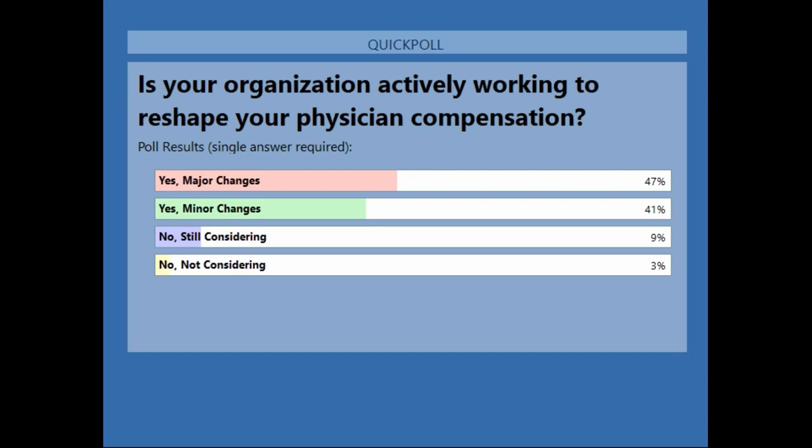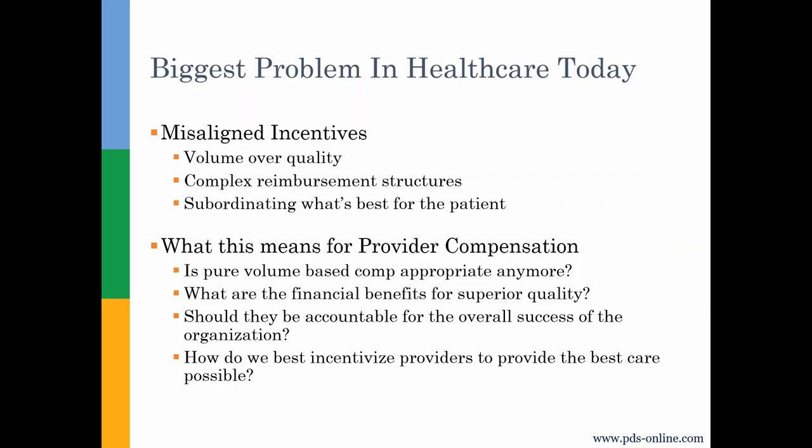It really makes a lot of sense. One of the things I've found reading articles and attending conferences is that the biggest problem going on in healthcare today is a problem of misaligned incentives. Right now we're incentivizing volume over quality, and anytime that happens it really subordinates what's best for the patient. Are we really incentivizing keeping these patients healthy? If you want to align the incentives for your organization as well as for the providers, we have to ask ourselves: is volume-based compensation really appropriate, or should we be moving more towards organizational efficiency by incentivizing our providers to provide the best care possible and making them accountable for the success of the overall organization?